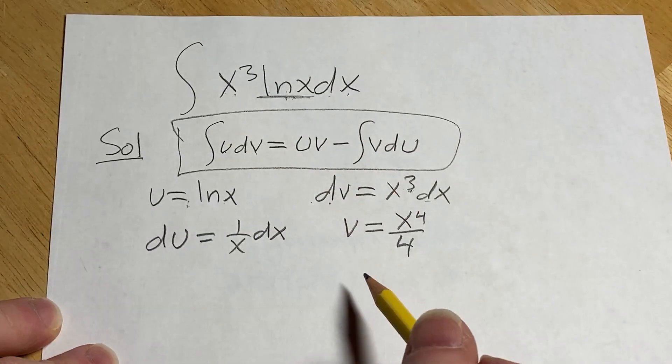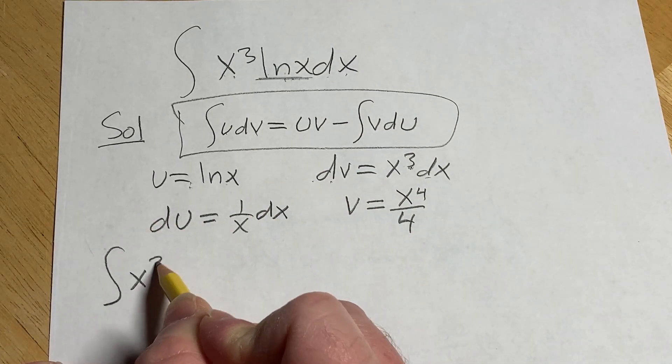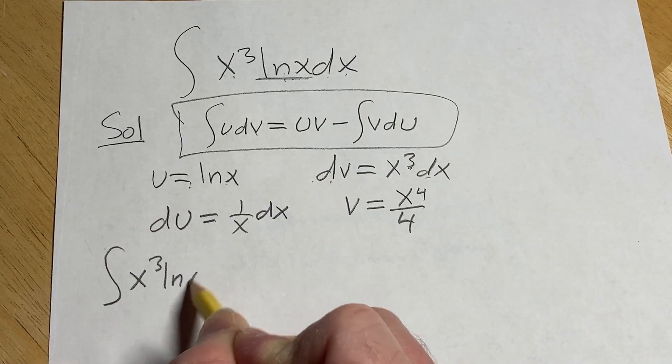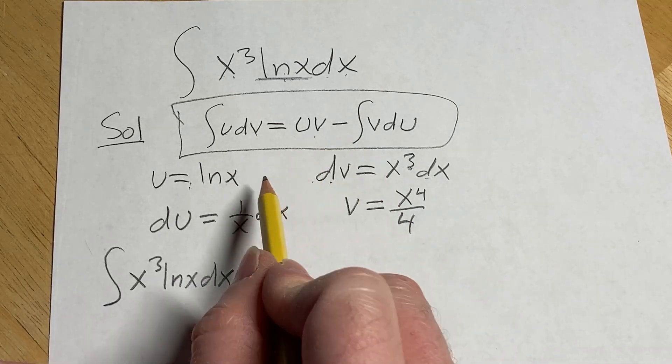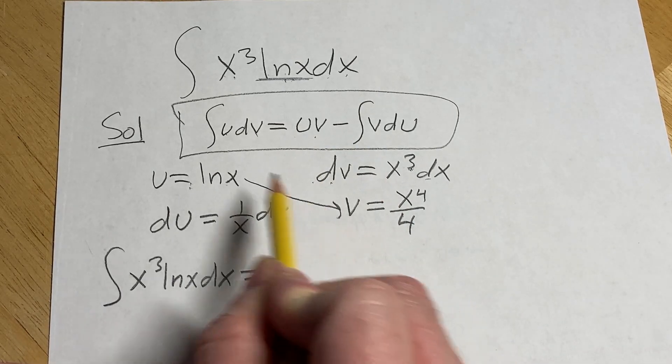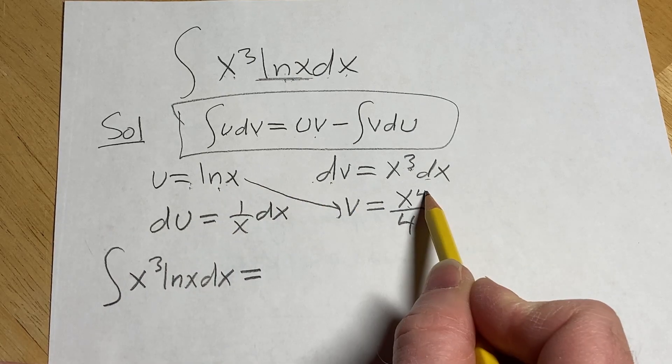All right I'm going to write down the original problem again so we have the integral of x cubed lnx dx. This is equal to uv so it's this one times this one so lnx times x to the 4 over 4.